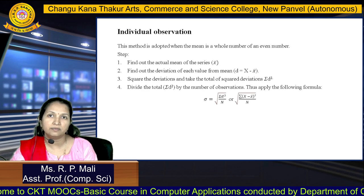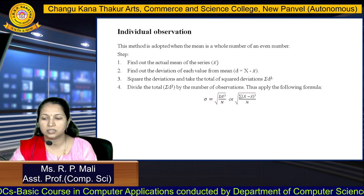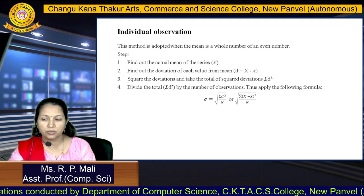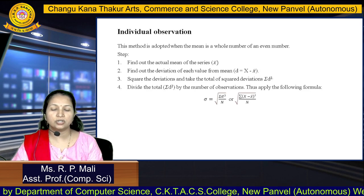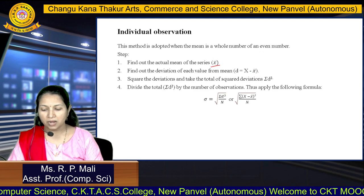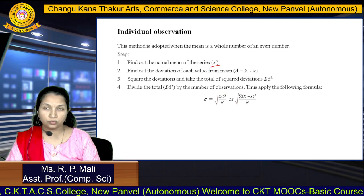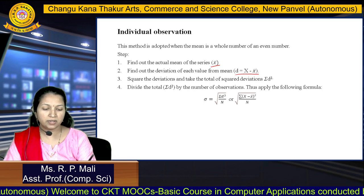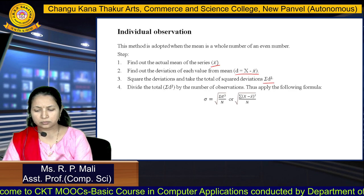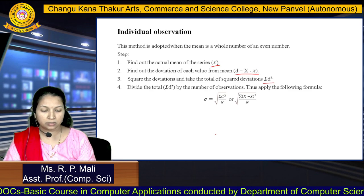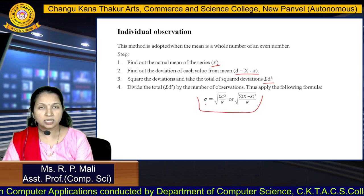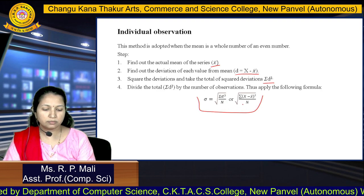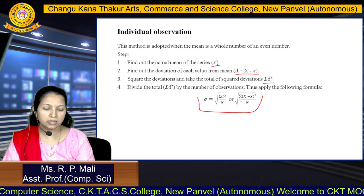We are going to find the standard deviation for individual series, discrete series, and continuous series. For individual series, this method is adopted when the mean is a whole number. The steps are: find the actual mean X̄; find the deviation of each value from the mean, D = X − X̄; square the deviations and find the total, Σ D²; then the formula is σ = √(ΣD²/N) or √(Σ(X − X̄)²/N).